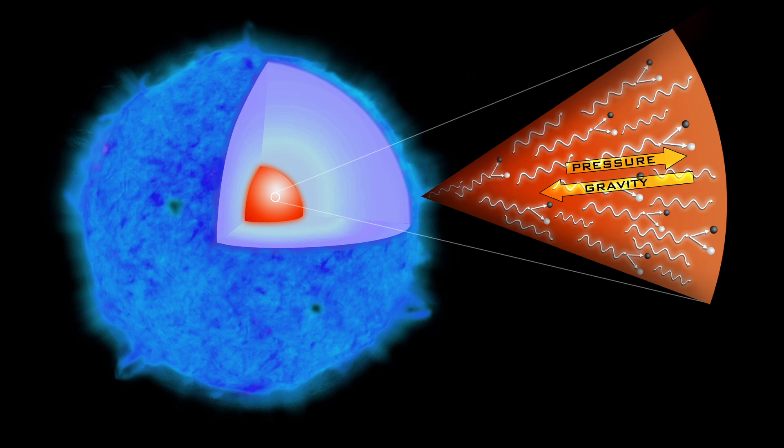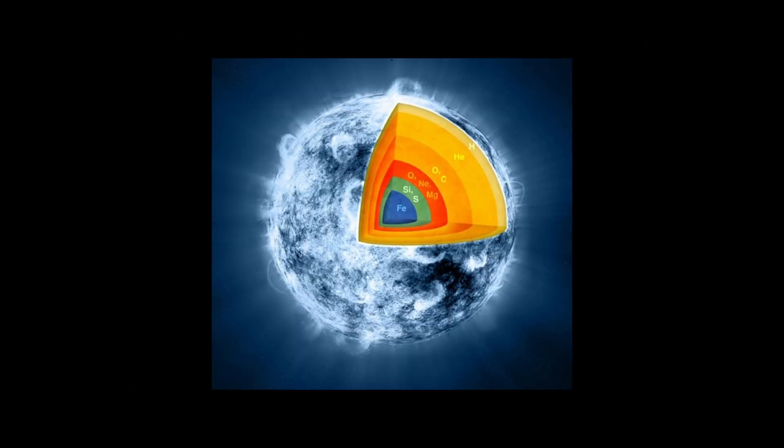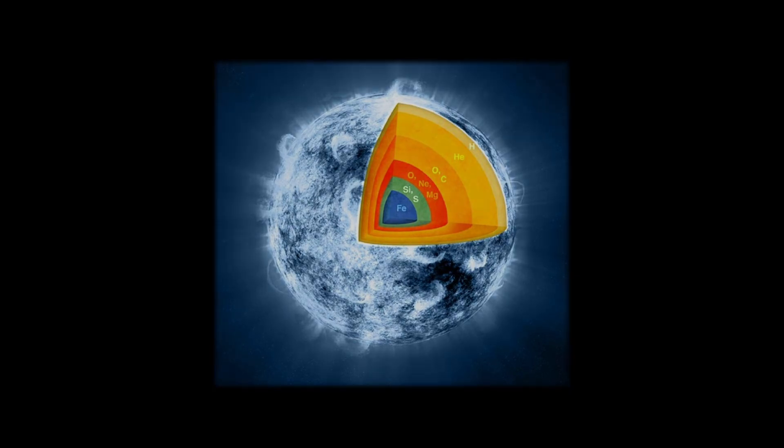Fusion releases radiation pressure, which up to this point has been able to hold the star from being overwhelmed by the gravitational pressure. But with a core that can no longer fuse, it results in a decrease of radiation pressure, and therefore the resistance towards gravity also diminishes.